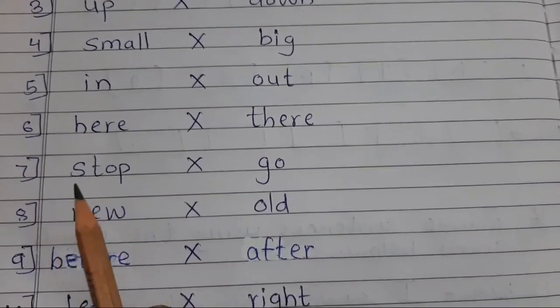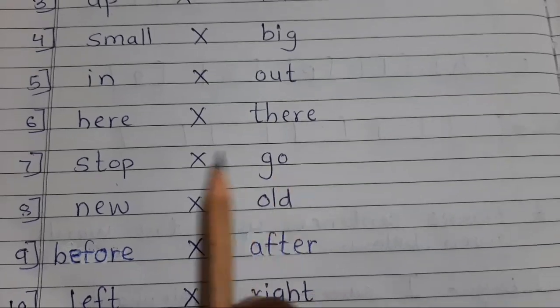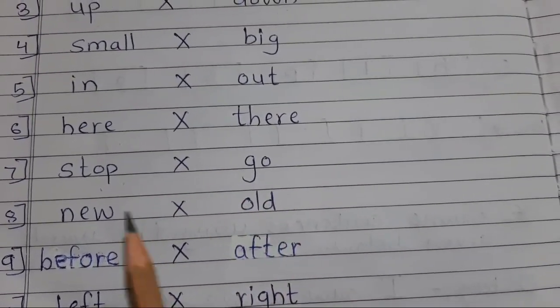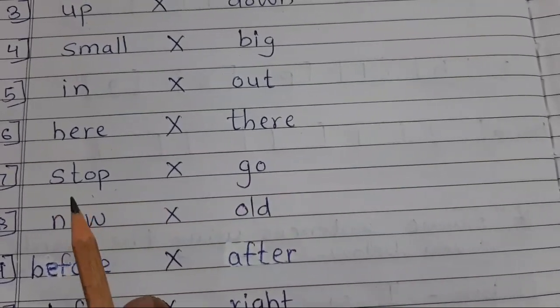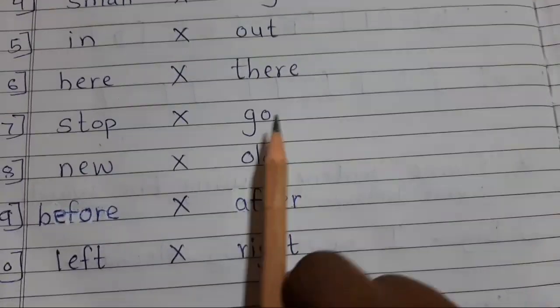Number seven. S-T-O-P stop. Opposite G-O go. Stop means ruko. G-O go. Go means jao. Stop. Go. Ruko. Jao. Stop. Go.